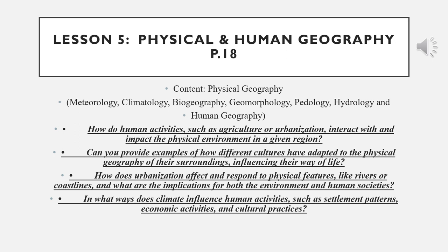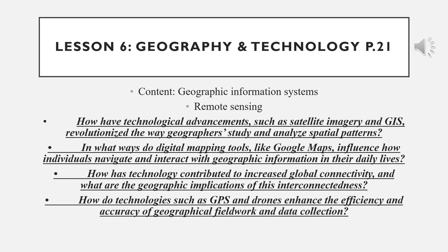In regard to physical and human geography, we're going to talk about certain subfields and subcategories — human activities, physical environment and surroundings, the influence of urbanization, climate, cultural practices, and economic activities. As a conclusion to the unit, we're going to link geography and technology by discussing geographic information systems and remote sensing, and answer guided questions such as: how do technologies like GPS and GIS enhance the efficiency and accuracy of geographical fieldwork and data collection?